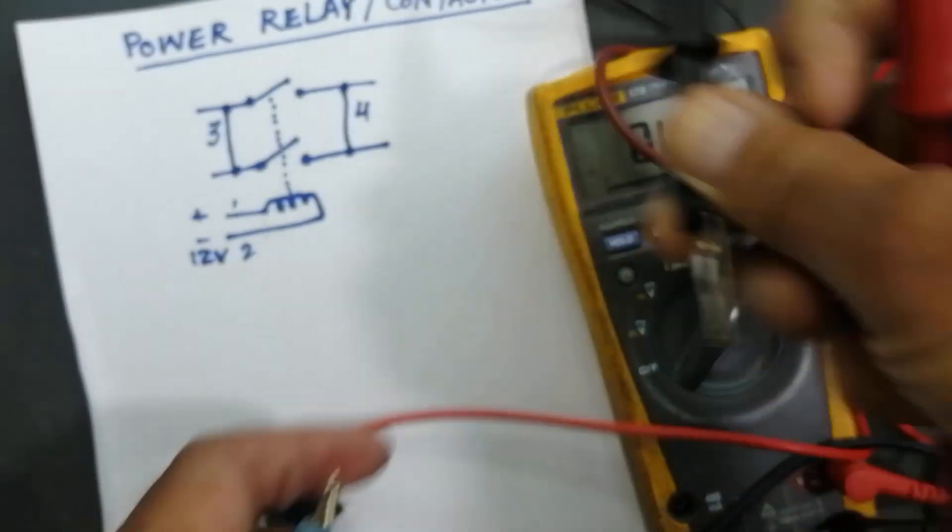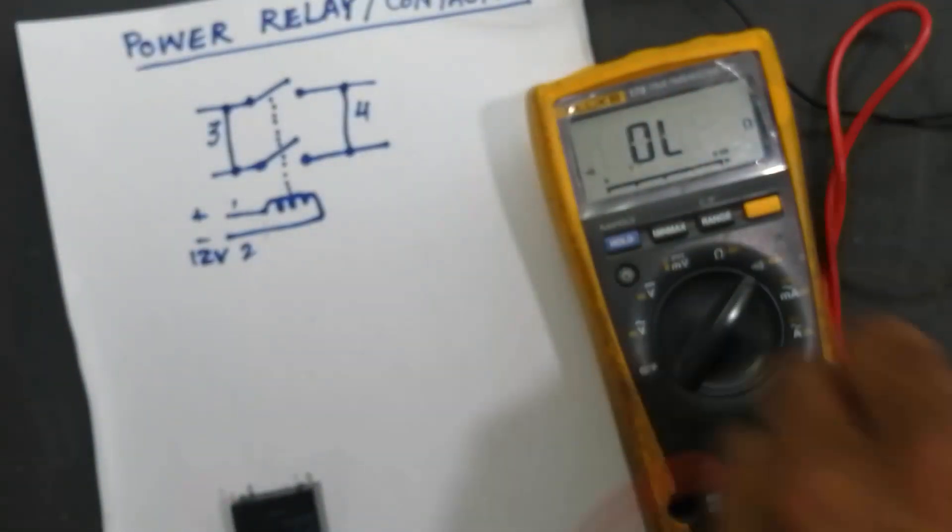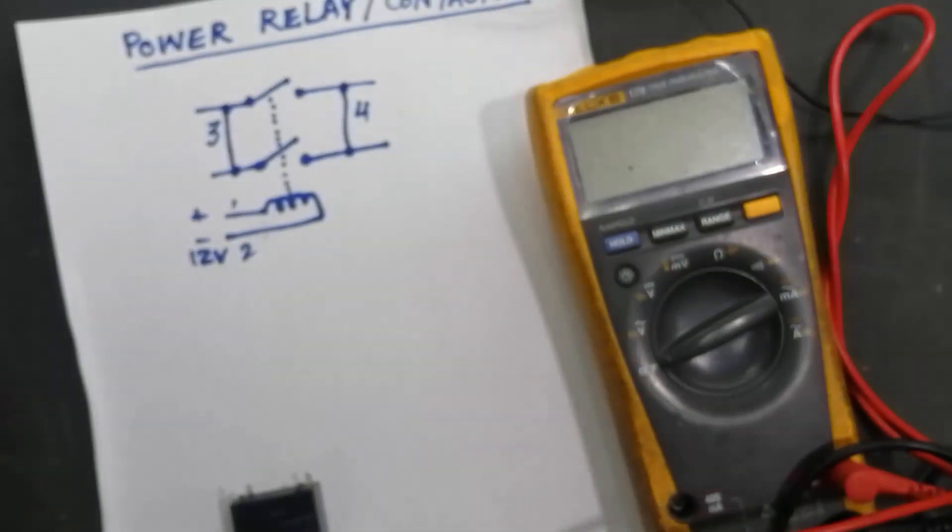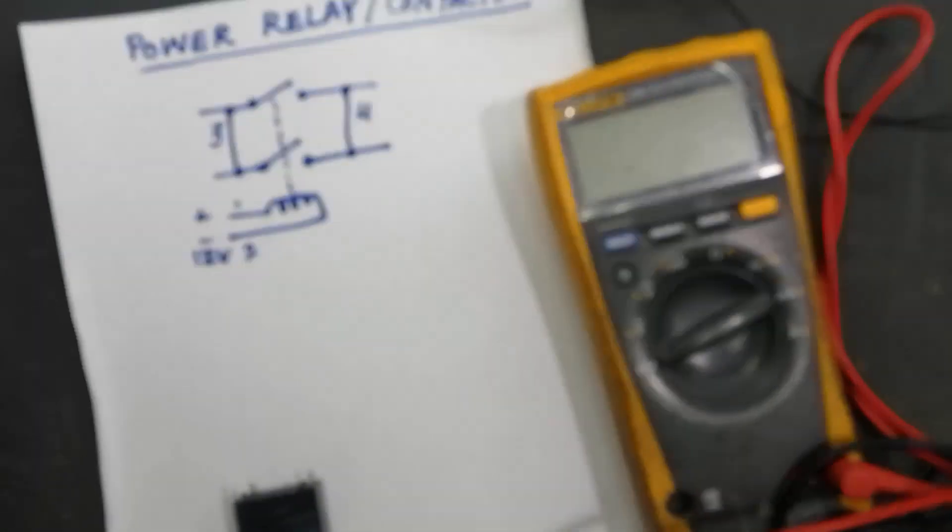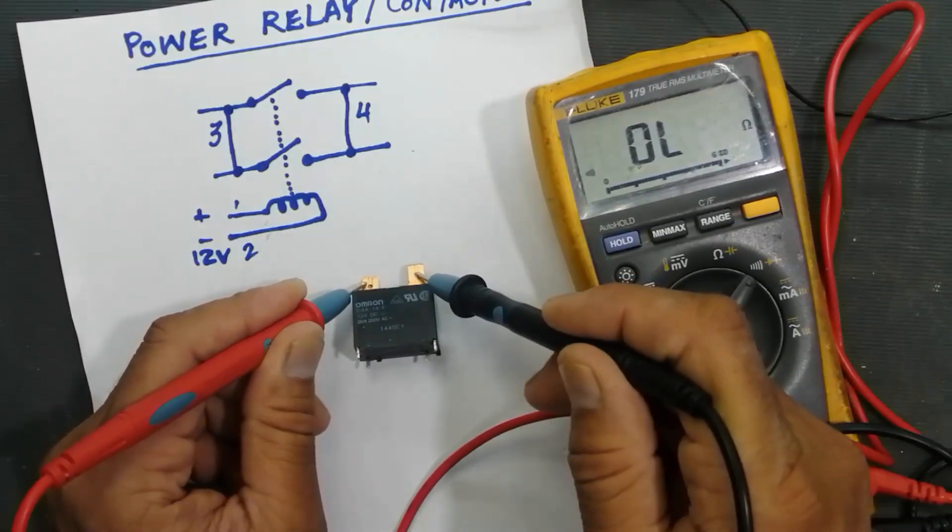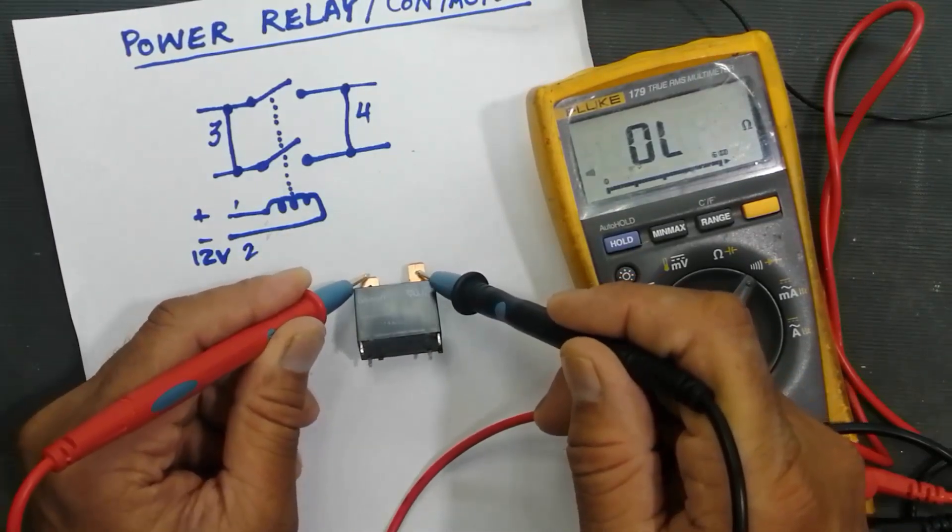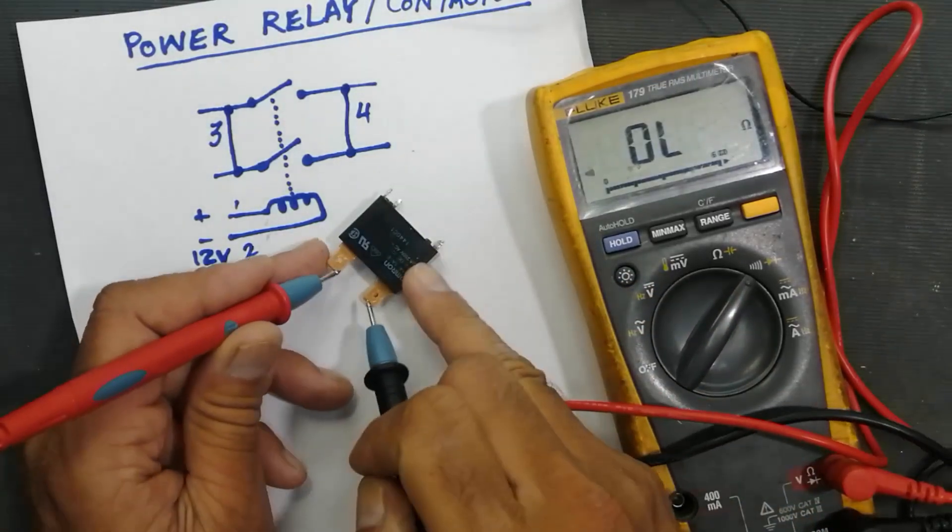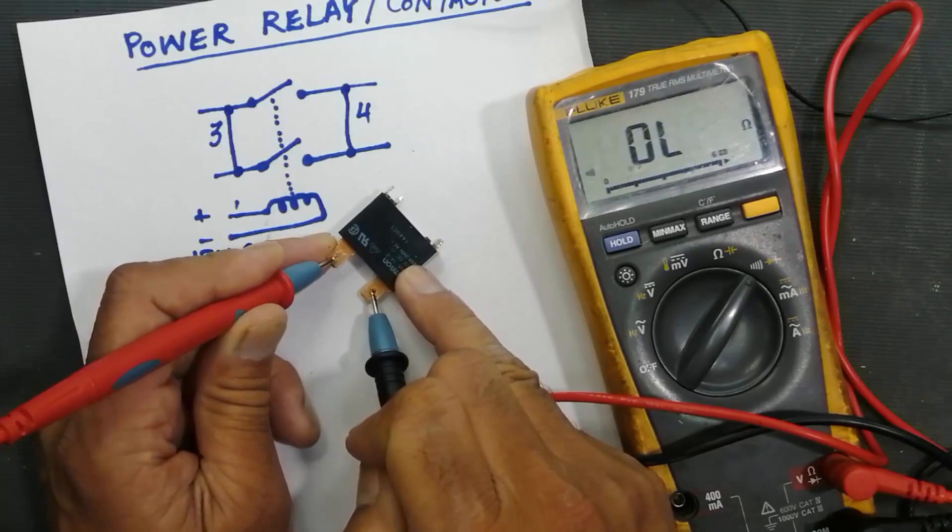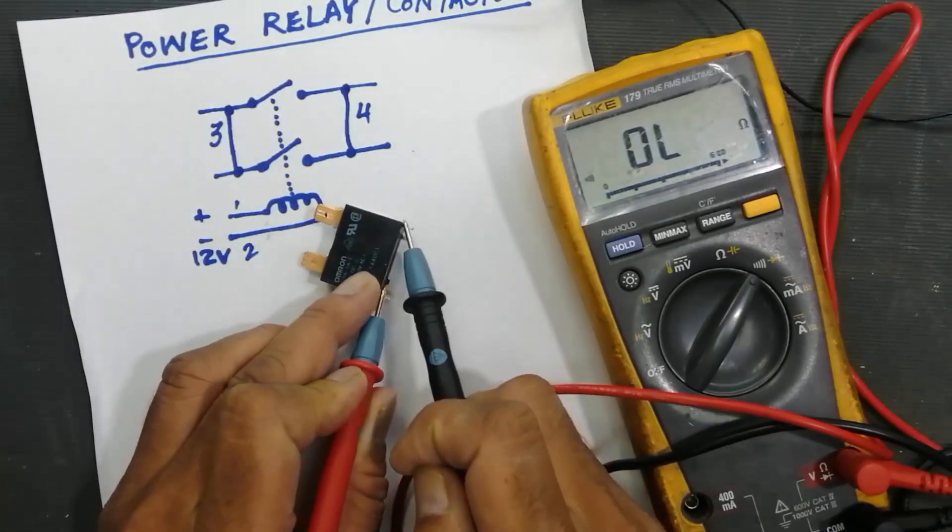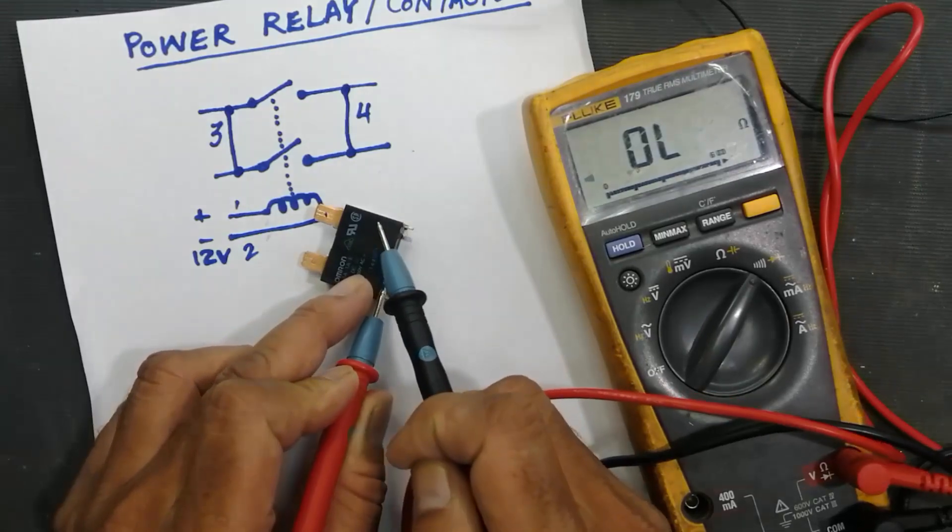So if it is tested in this way that means the relay is good. If it does not give continuity, or if it gives continuity directly at these two points without applying coil voltage or control voltage, that means the relay is short internally. Or this point gives continuity directly, that means the relay is short internally.